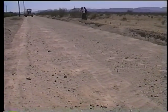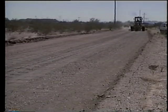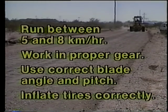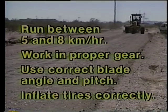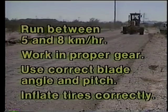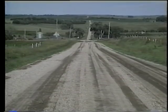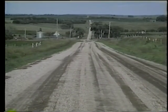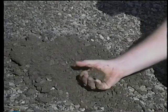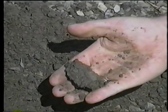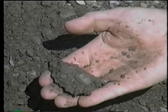This type of corrugation is easy to detect because the ridges are diagonal, matching the blade angle. To avoid making them, grader operators should run between five and eight kilometers per hour, work in the proper gear, use the correct blade angle and pitch, and inflate their tires correctly. As for preventing washboards, the only sure way is to close the road to traffic permanently. The only practical preventive measure is to make sure that the surfacing material has enough fines in it.